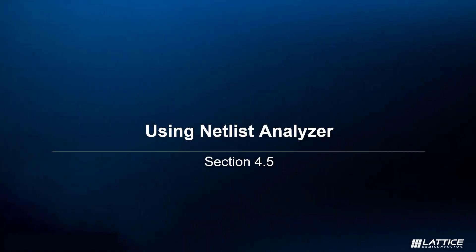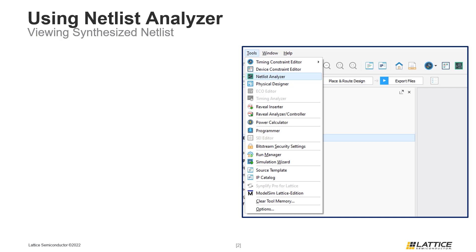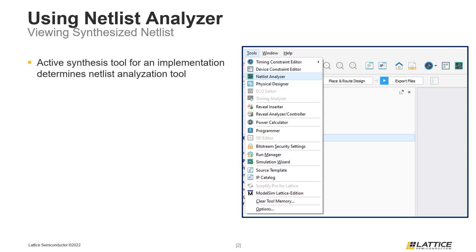Chapter 4, Section 5: Using Netlist Analyzer. In this section we will discuss Radiant's Netlist Analyzer tool and how it can be used to view a project's synthesized netlist. The active synthesis tool for a project's implementation determines which tool is used to view the synthesized netlist. For projects using LSE, Netlist Analyzer is used; for projects synthesized using Synplify Pro, HTL Analyst is used. This section focuses on Radiant's Netlist Analyzer and how it is launched.